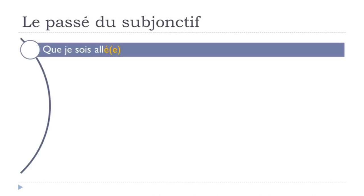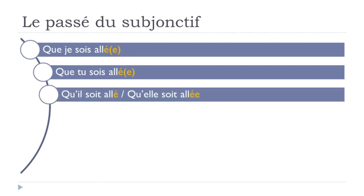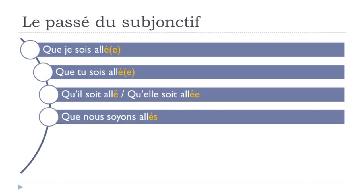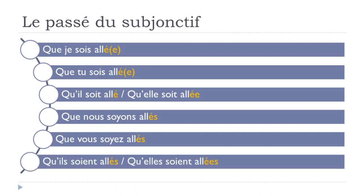The full conjugation of aller at the passé du subjonctif: que je sois allé(e), que tu sois allé(e) — remember, no liaison here — qu'il soit allé, qu'elle soit allée, que nous soyons allés/allées, que vous soyez allés/allées, qu'ils soient allés, qu'elles soient allées.